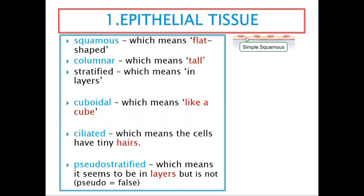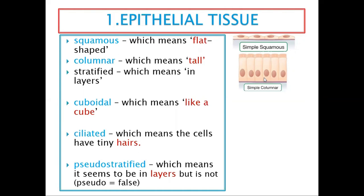Looking at pictures: squamous cells are just flat. It can be squamous but stratified — one cell, but now there is another layer on top, like a double storey. Then columnar cells look like columns — it could be simple columnar, or stratified columnar with another layer on top. Then cuboidal cells look like ice cubes. When identifying them, look at the shape first.